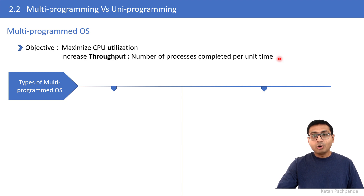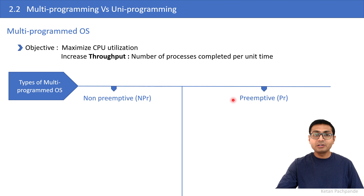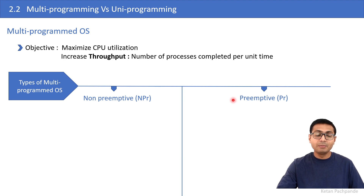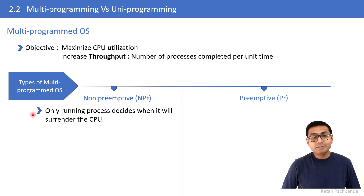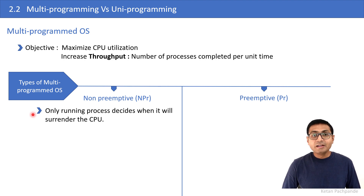There are two types of multiprogrammed operating systems: non-preemptive OS and preemptive operating system. These concepts will be important in CPU scheduling algorithms and synchronization problems. In a non-preemptive operating system, once a process is scheduled to the CPU, the decision to leave the CPU is made only by that running process. Other processes cannot tell the running process to stop — that is not possible in non-preemptive architecture.